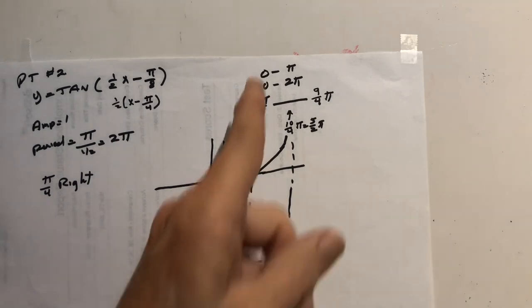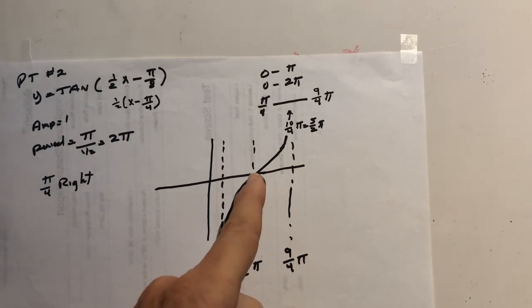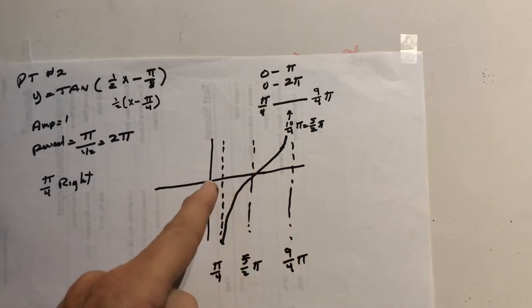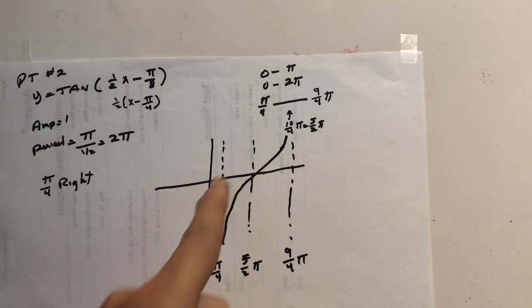So it's in the middle, which means that's where it's going to cross, because we didn't shift up and down. Instead of going through the origin, it's shifted over to the middle one of the 3 dotted lines. So just come up, through it, and up.